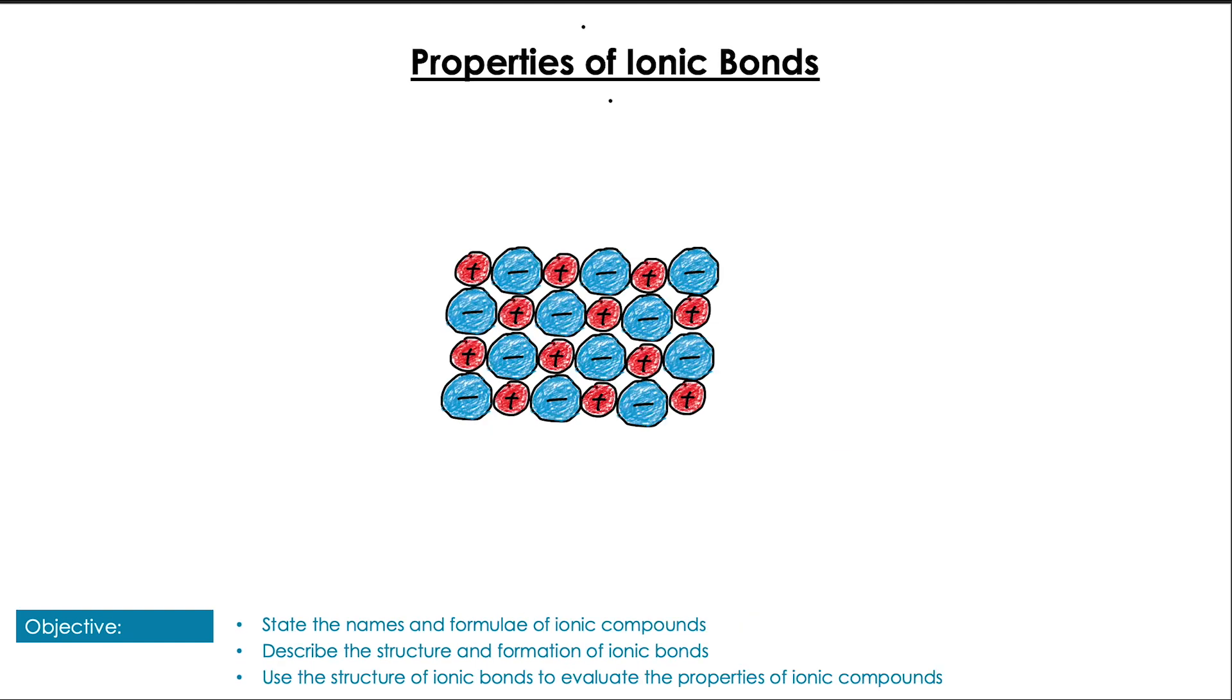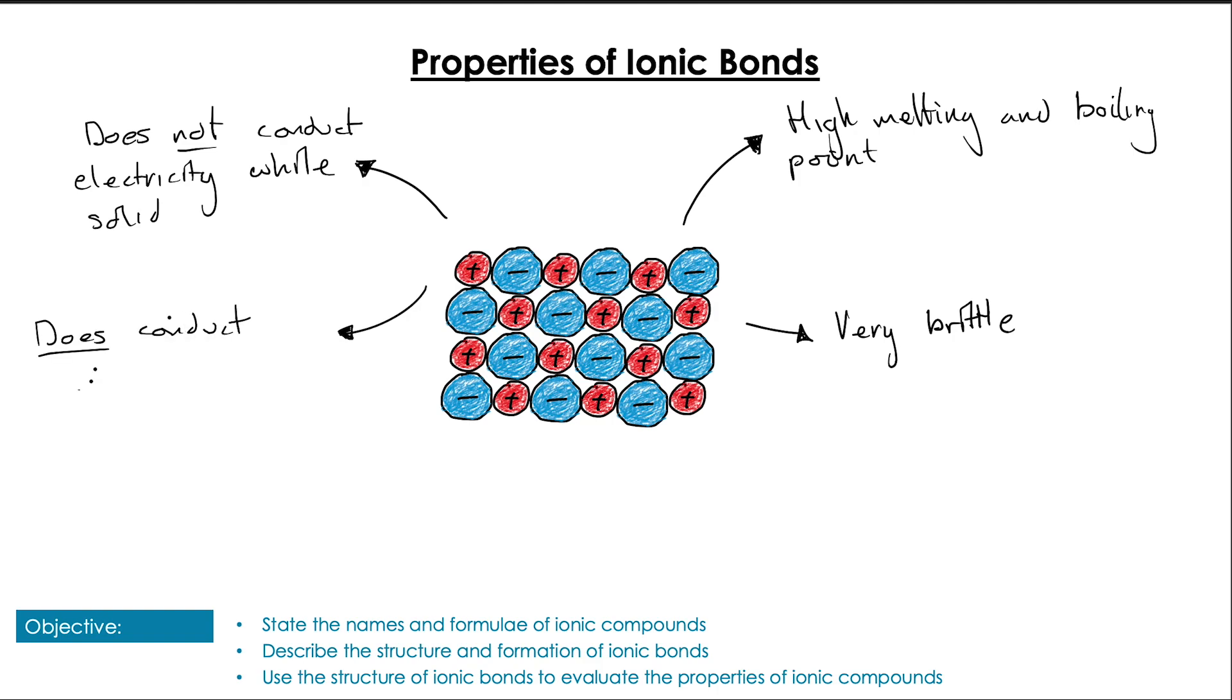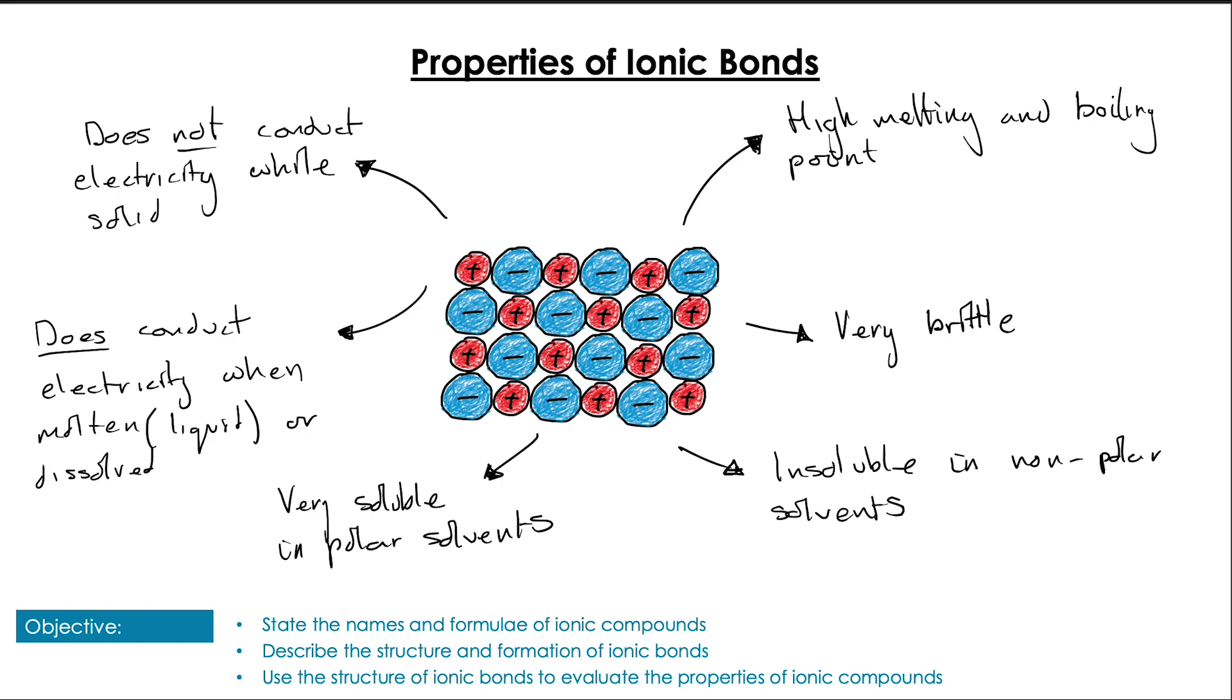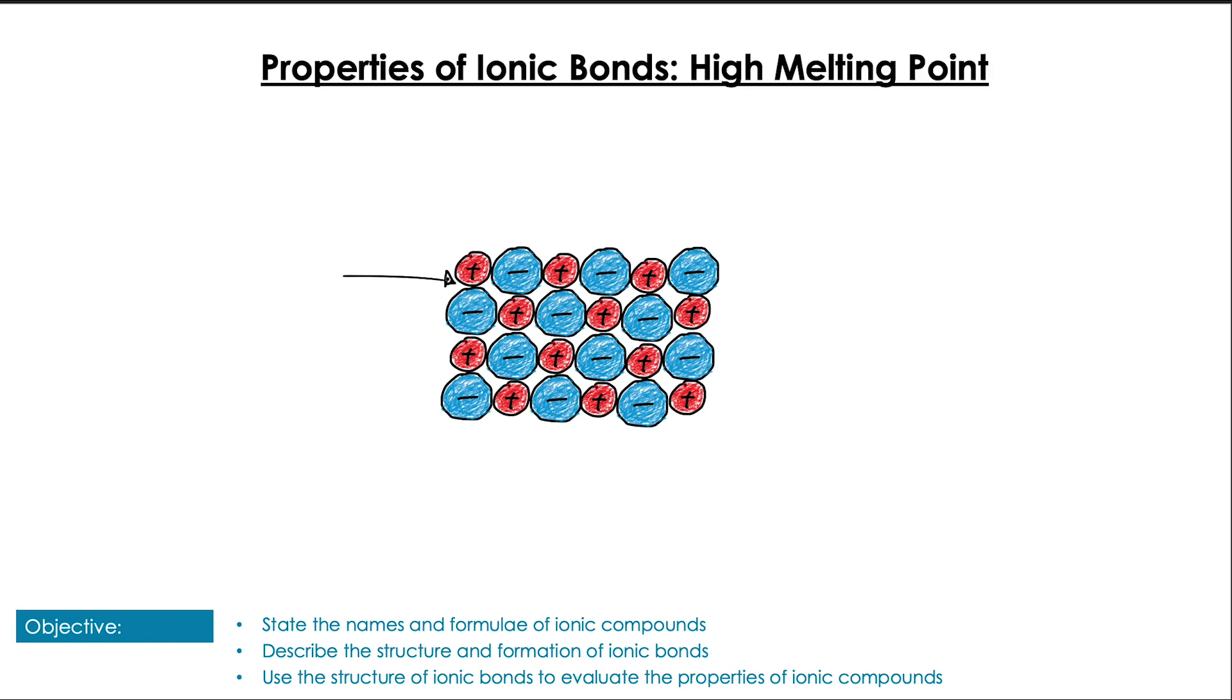What properties do these ionic structures give? We have high melting and boiling points. These are very brittle. They do not conduct electricity while in solid form. However, they do conduct electricity when molten or in liquid form or when dissolved in a solvent. In terms of solvents, they're very soluble in polar solvents and insoluble in non-polar solvents, which makes sense because we'd expect the polarity to interact with the charge of all the ions. When explaining high melting and boiling points, there's a pretty clear reason. Opposite charges are very attracted to each other, so they require a large amount of energy to separate the individual ions, thus we would expect a high melting point to overcome those forces of attraction.